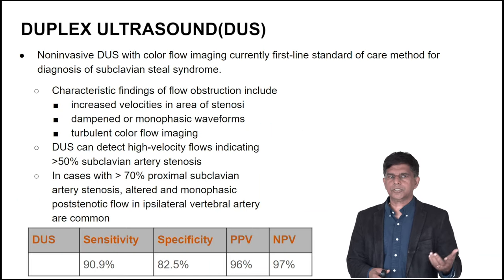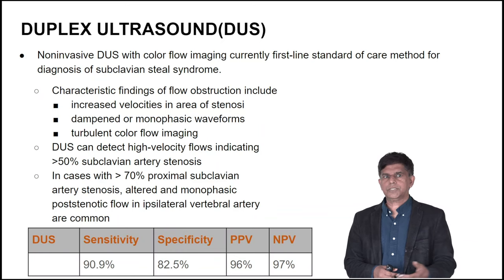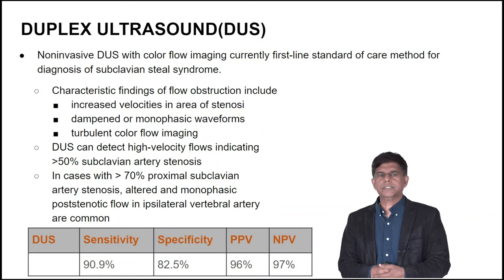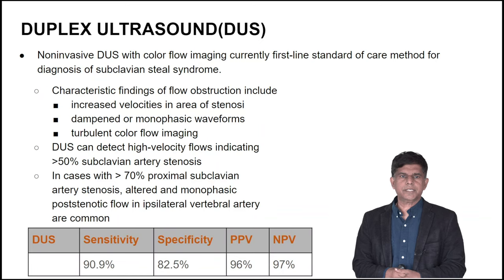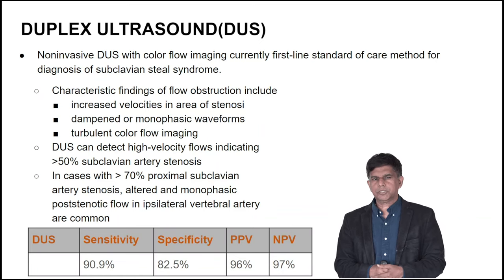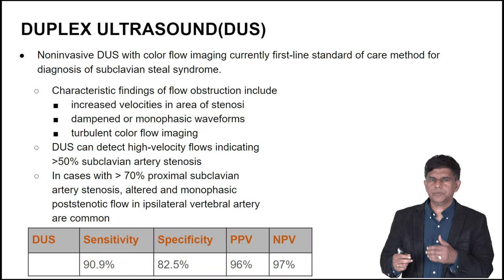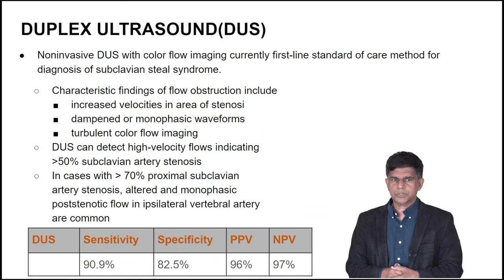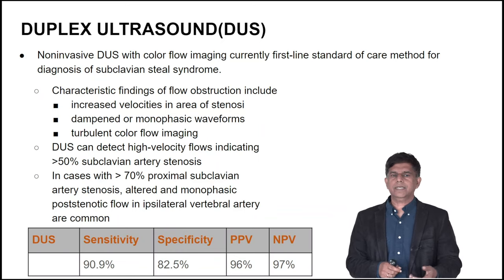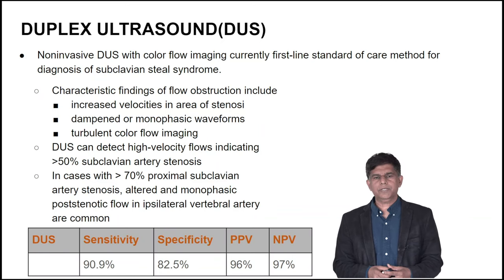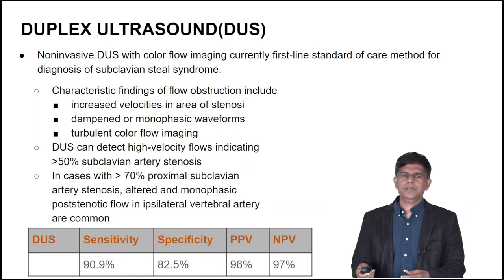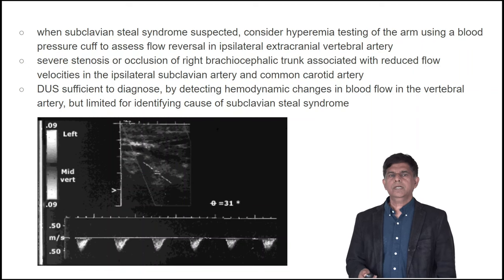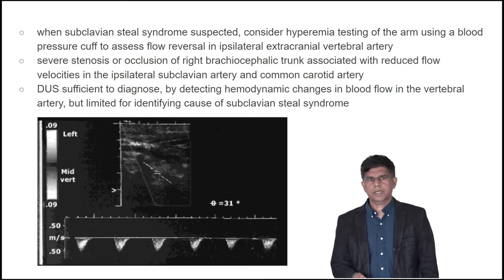For duplex ultrasound, the characteristic findings are increased velocity across the stenosis and dampened monophasic waveforms. Color flow imaging can detect high-velocity flows indicating greater than 50% subclavian artery stenosis. Sensitivity and specificity are very high when stenosis is greater than 70%: sensitivity up to 90%, specificity 82.5%, positive predictive value 96%, and negative predictive value 97%. Ultrasonography is the first initial step.